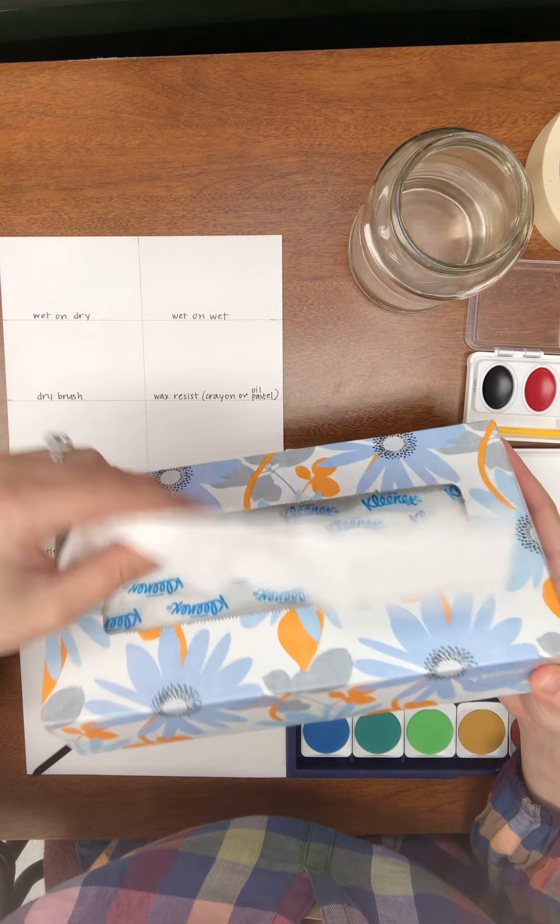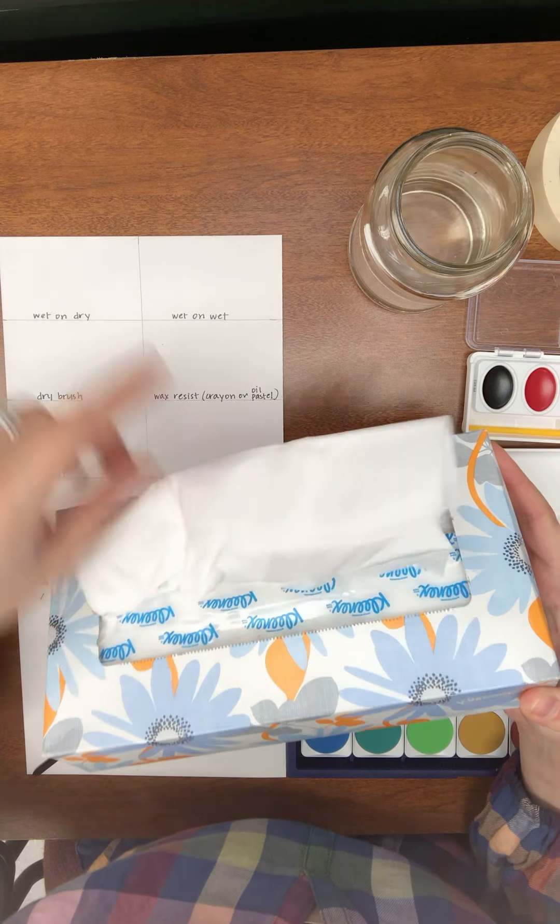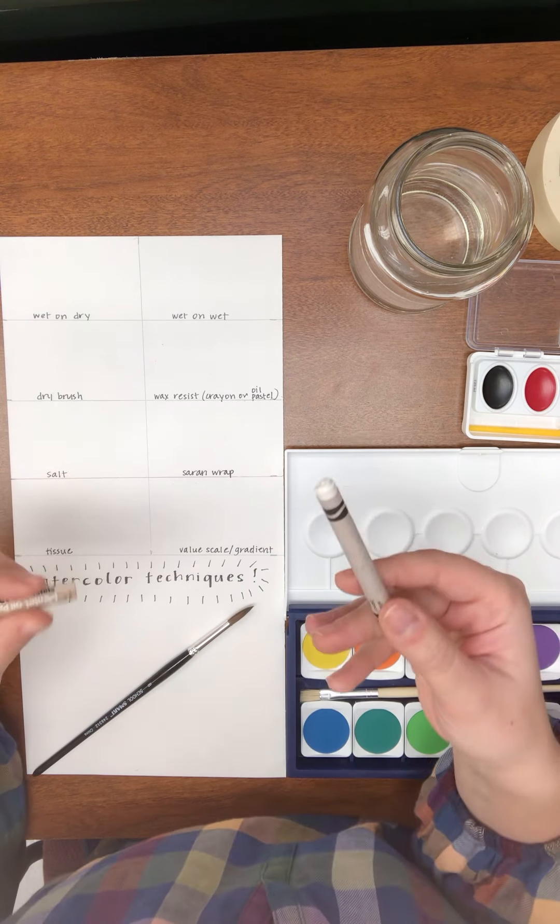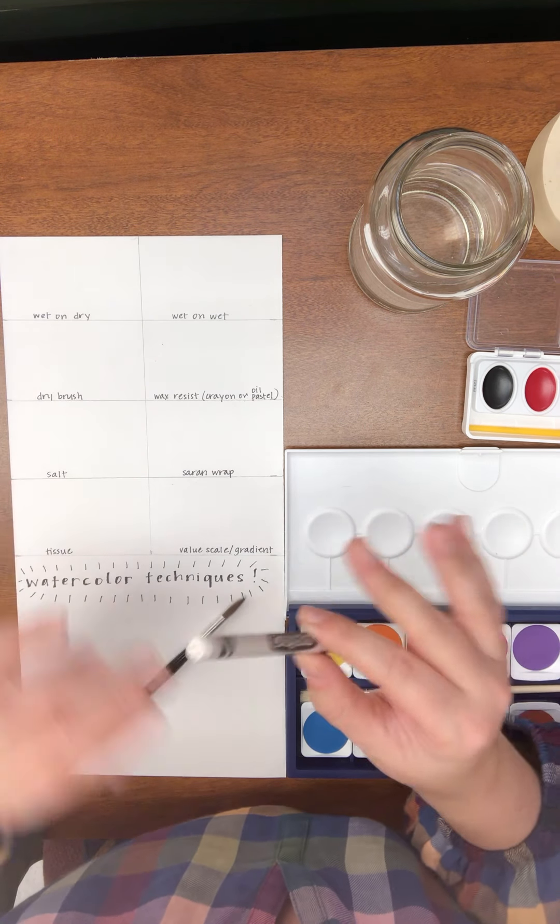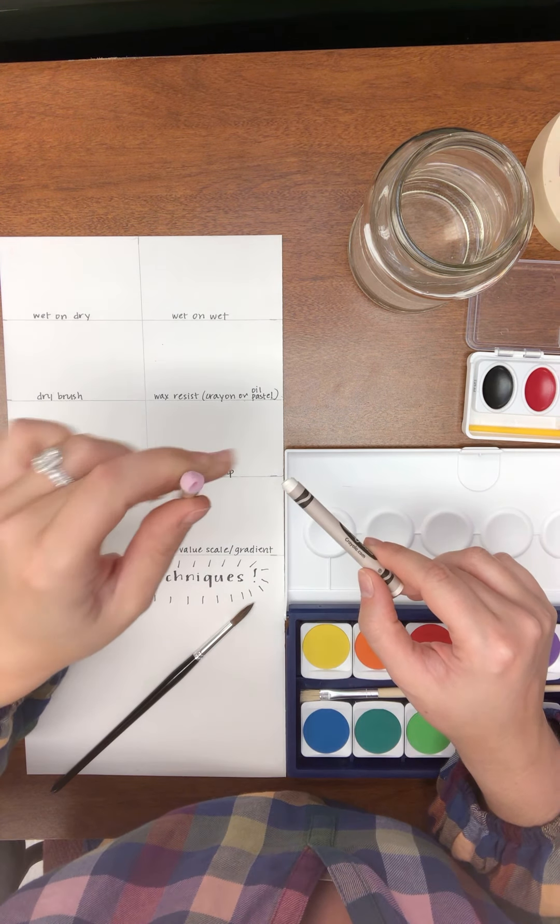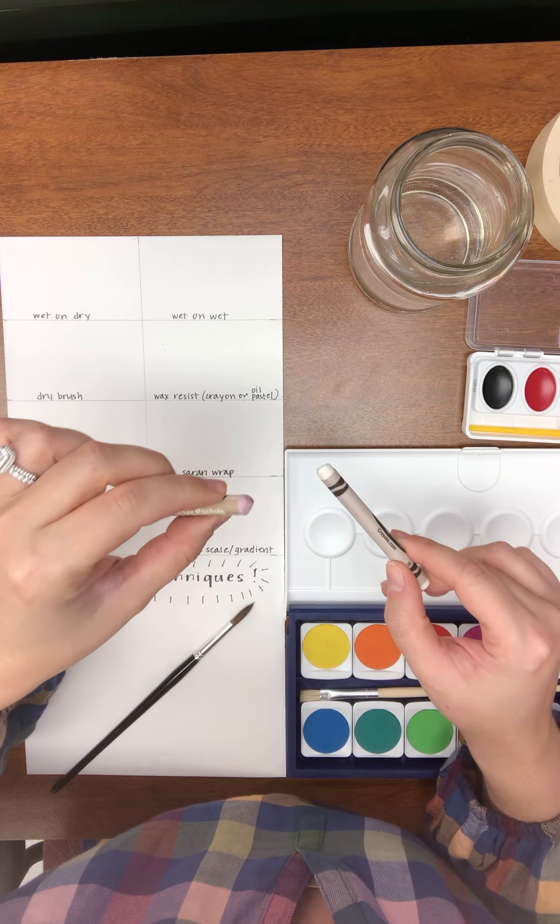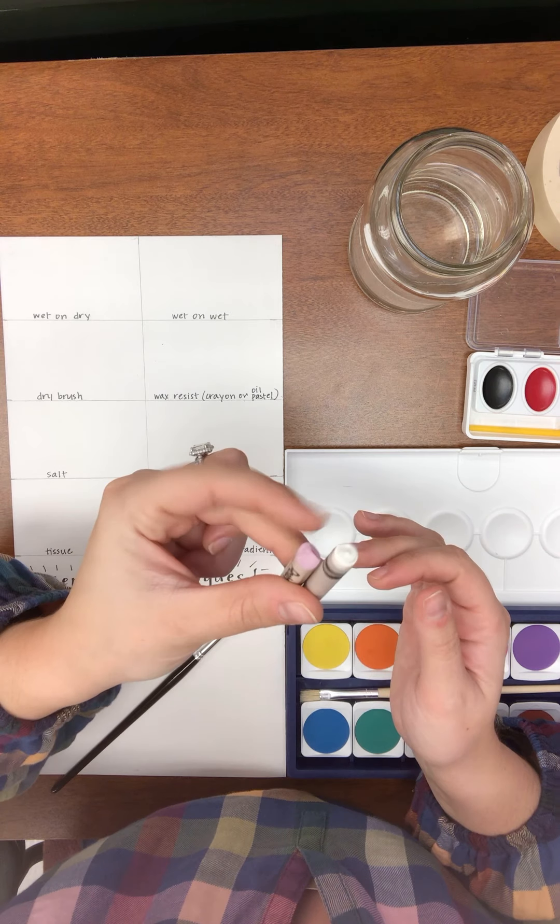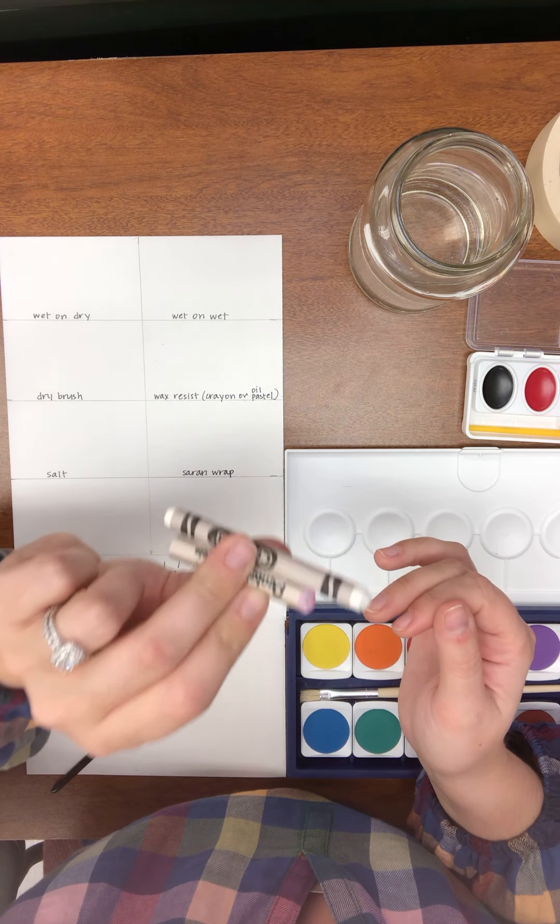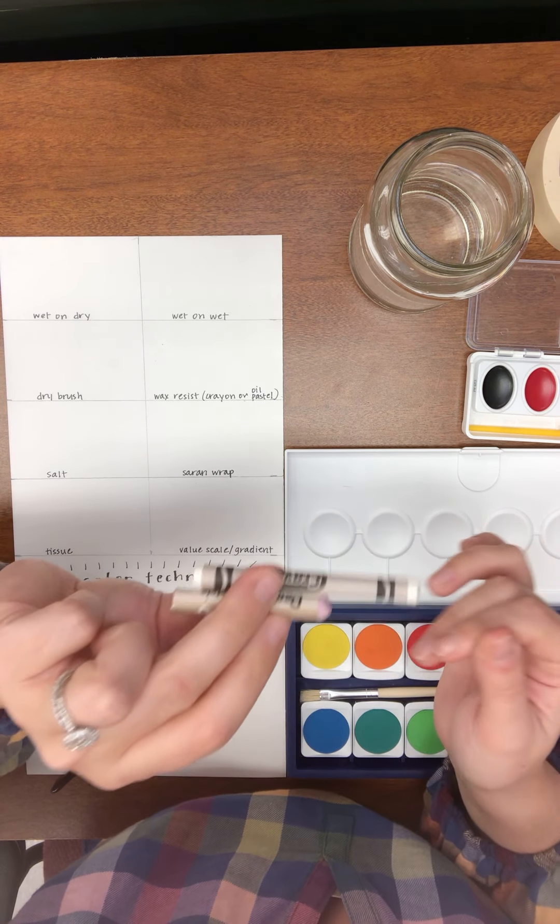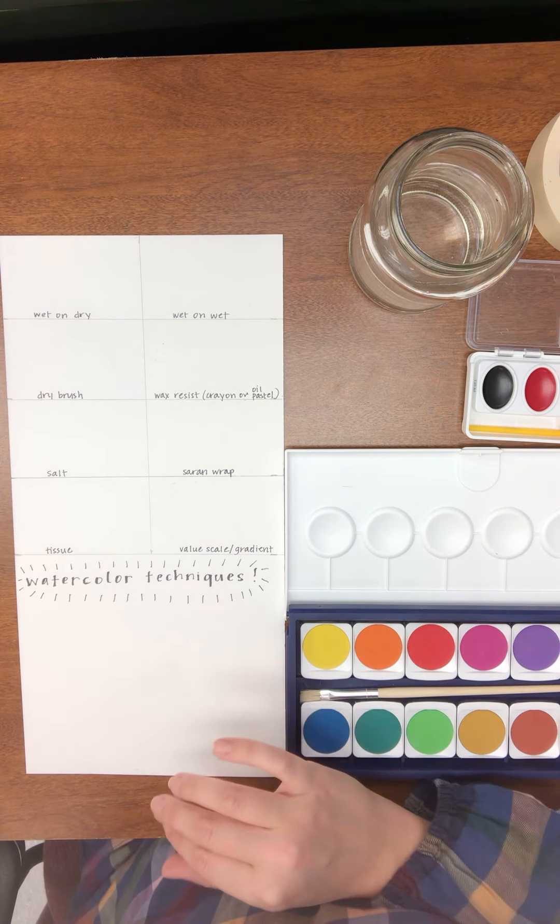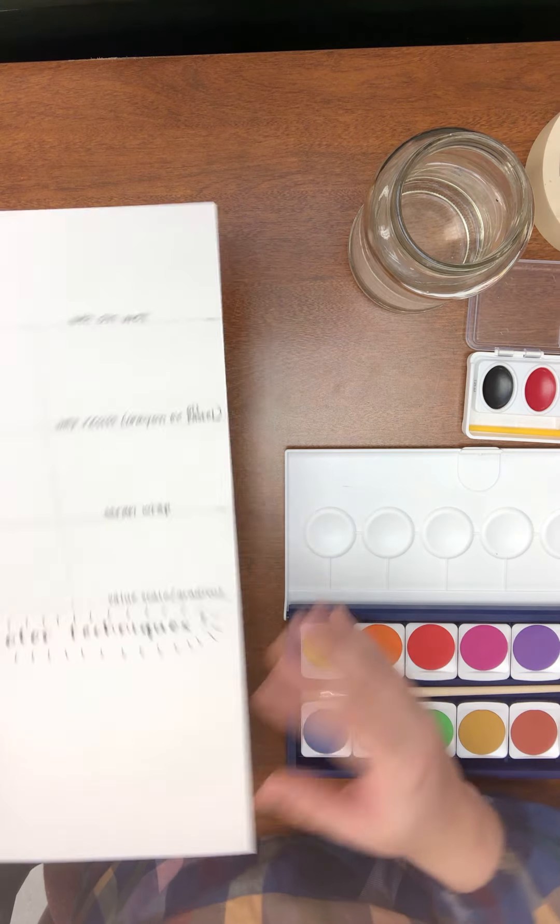I have a box of tissues next to me and that is something that I will use to help me absorb some paint and use a technique with. The last thing I have is a white crayon and if you don't have a crayon that's okay. I also brought out an oil pastel. I grabbed a lighter color, a light purple from my set, so either option is fine. If you have both that is even better and your crayon does not need to be white. I just want to show you a cool technique that you can use with this.